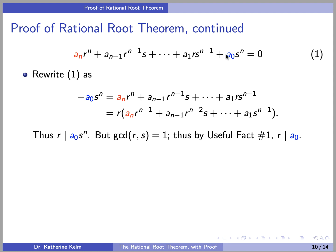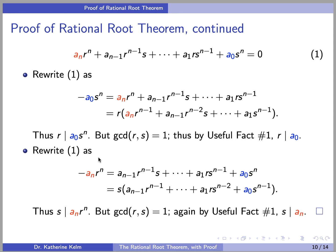First, rewrite it by subtracting a₀sⁿ from both sides. Then we end up with -a₀sⁿ equaling something with a factor of r. When we factor out r, we can see that r divides a₀sⁿ. But the GCD of r and s is 1, and thus by our useful fact number 1, r divides a₀, which is half of what we wanted to prove. Then rewrite the equation differently by subtracting aₙrⁿ from both sides to get -aₙrⁿ equaling an expression with a factor of s. Therefore s divides aₙrⁿ, but again the GCD of r and s is 1, so by our useful fact, s divides aₙ. And that completes the proof.